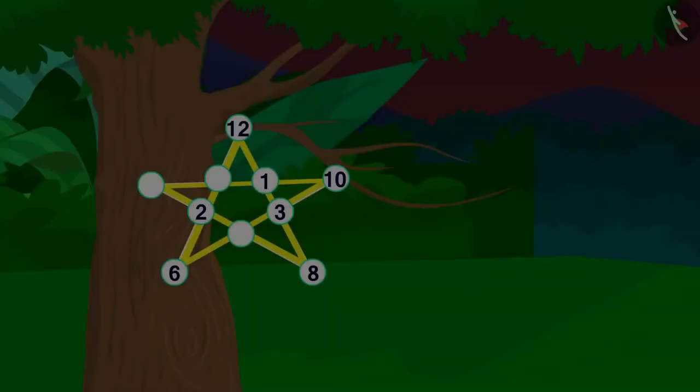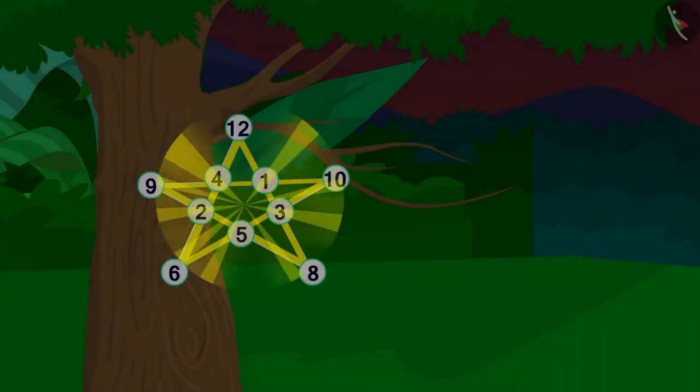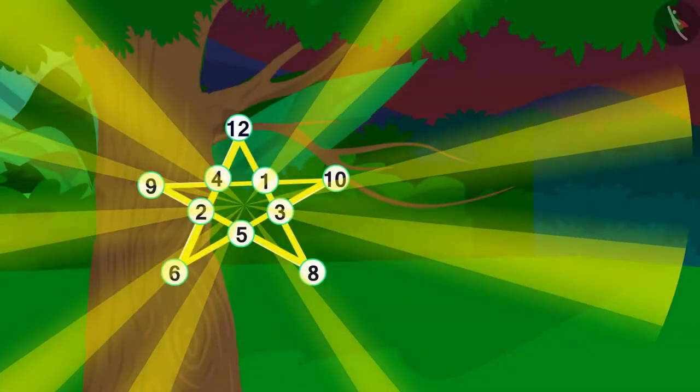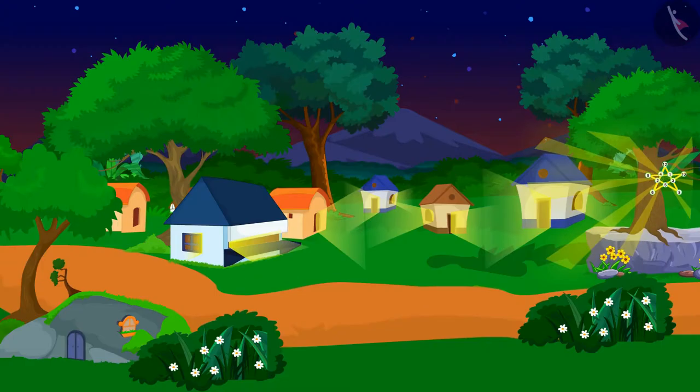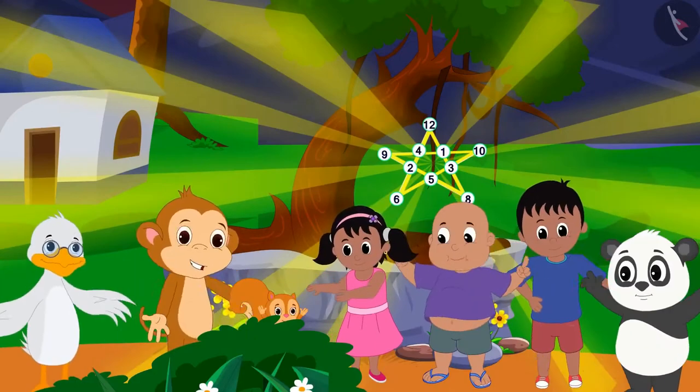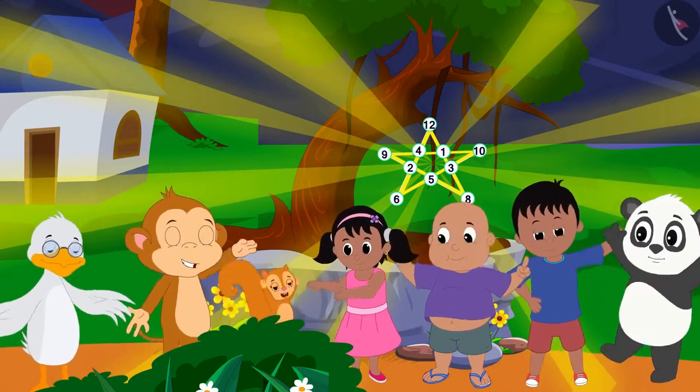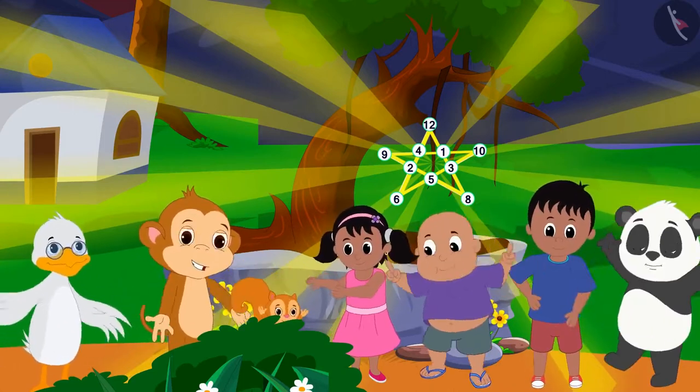As soon as the villagers filled the blanks of the star, light started coming out from the star and the electricity of the village resumed. All the villagers got excited and started dancing happily.